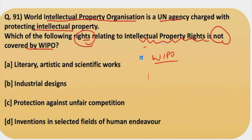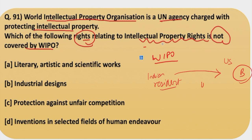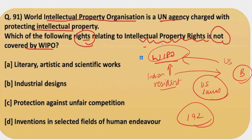Suppose you are an Indian resident and you have written a book, and you feel that the copyright has been infringed by a US resident, say B. So you can sue B as per US laws, because the US is also a part of WIPO and India is also a part of WIPO. In total, 192 countries are a part of WIPO, and therefore it is a very helpful and important organization.